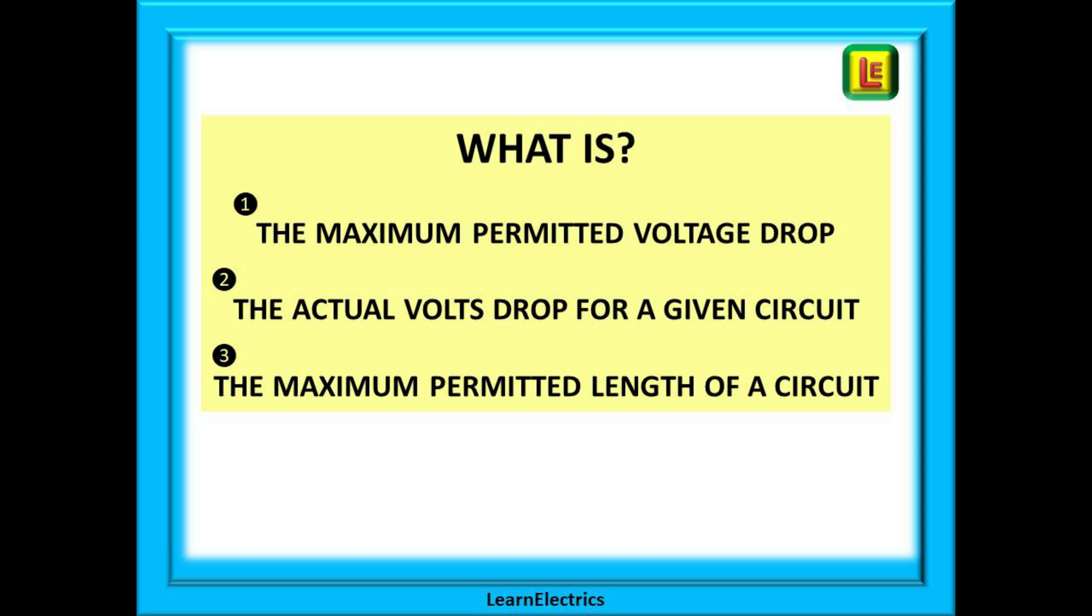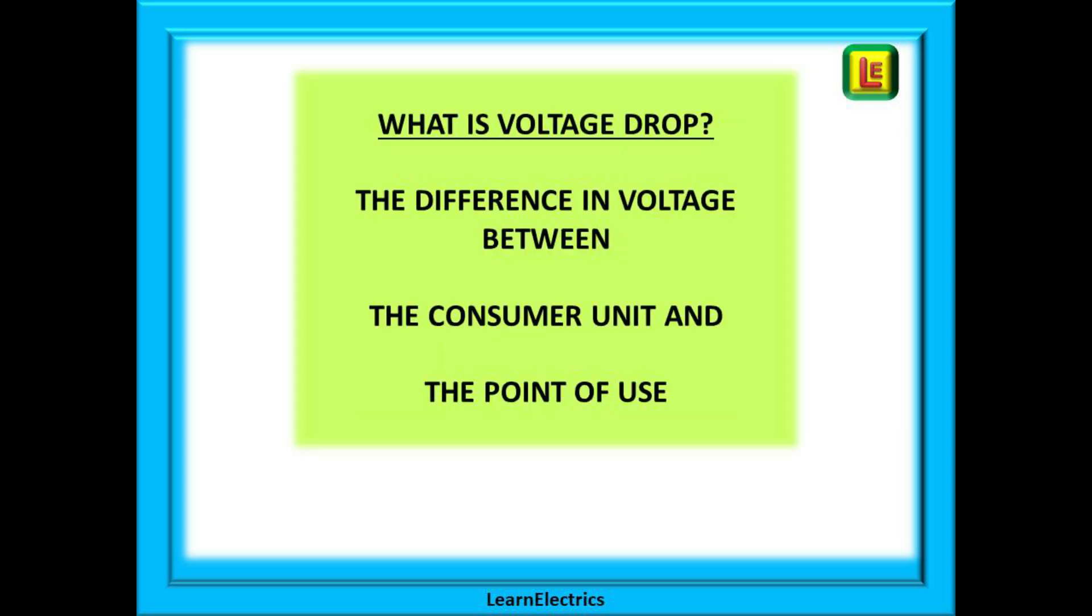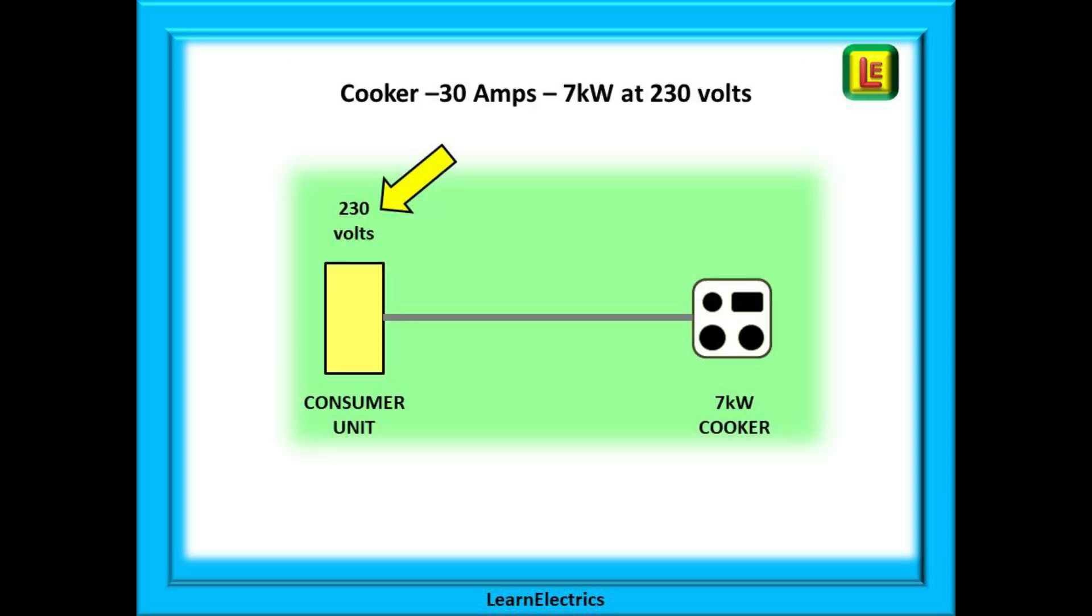If you know how to find these three answers you really have cracked it. Let's begin with a quick understanding of just what voltage drop is and how it affects cables and circuits. What is voltage drop? It is simply the difference in the voltage between the consumer unit or distribution board and the furthest point of use on each circuit, for example the cooker, the shower, the furthest light, the electric gates, and so on.